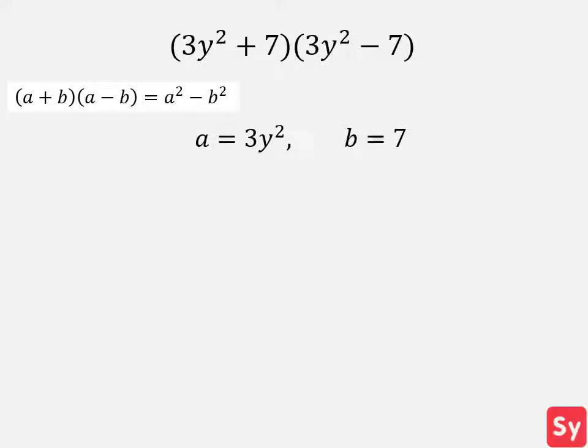Last example, we have 3y squared plus 7 times 3y squared minus 7. We look at this identity and can see that a equals 3y squared and b equals 7.